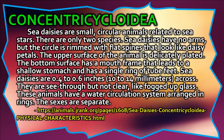Sea daisies are small circular animals related to sea stars; there are only two species. Sea daisies have no arms, but the circle is rimmed with flat spines that look like daisy petals. The upper surface is delicately plated; the bottom surface has a mouth frame leading to a shallow stomach with a single ring of tube feet. Sea daisies are 0.4 to 0.6 inches (10–14 mm) across and have a water circulation system arranged in rings.